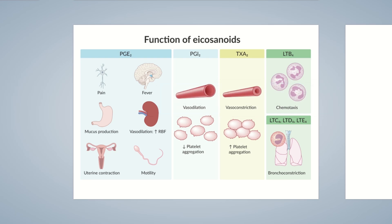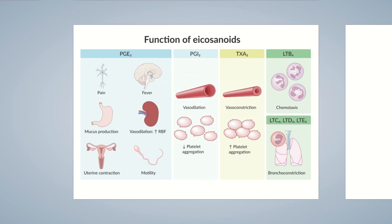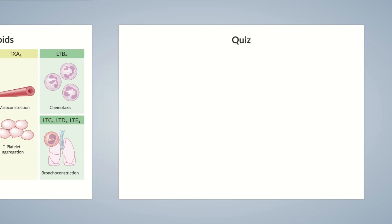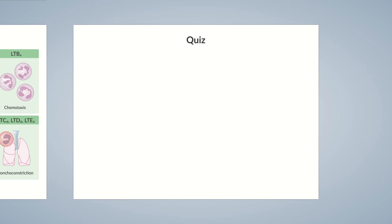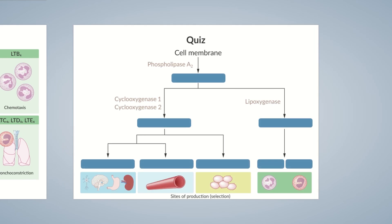We've now introduced the most important eicosanoids and explained their functions. Eicosanoids are also used in daily clinical practice — for example, in gynecology during labor induction and in pediatrics to keep the ductus arteriosus open. Further information can be found in our library. Now let's go to the quiz: arrange the arachidonic acid metabolites on the left side to the boxes in the pedigree chart. Good luck!